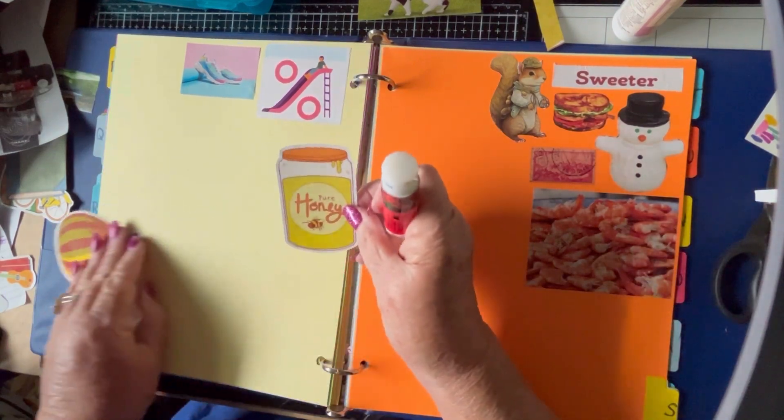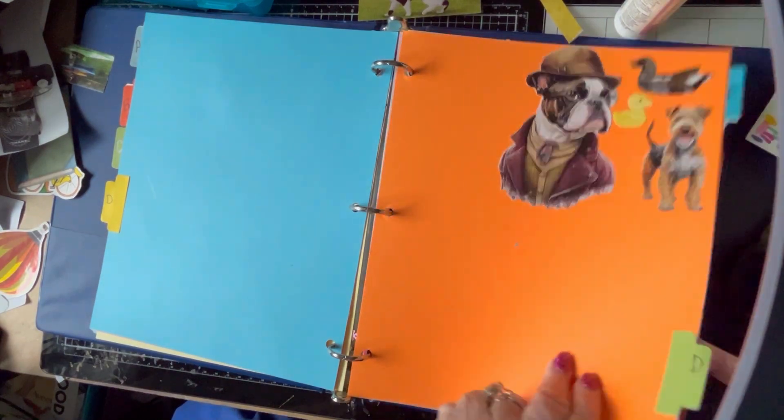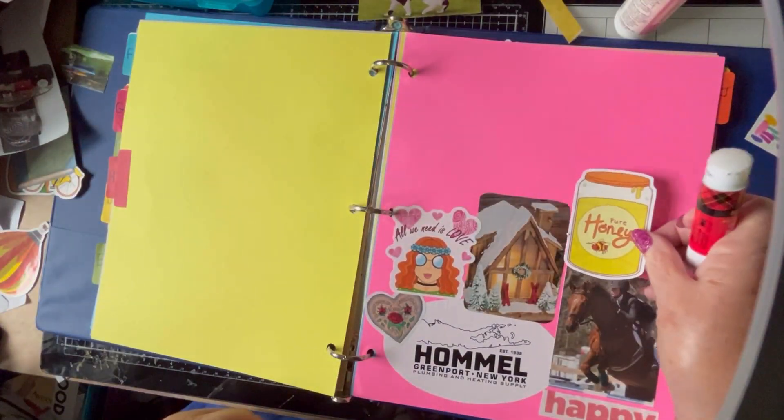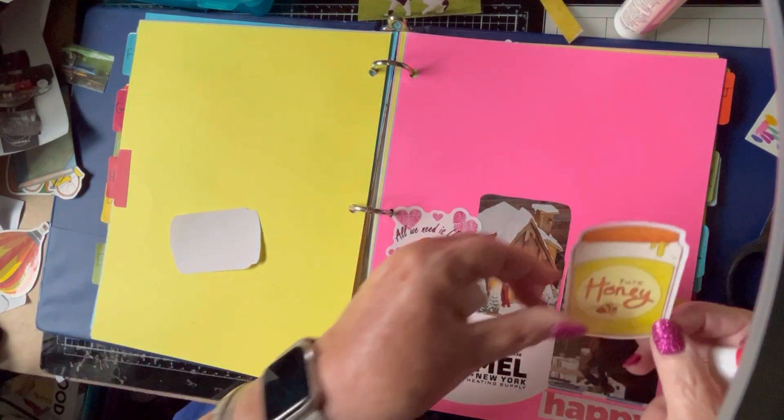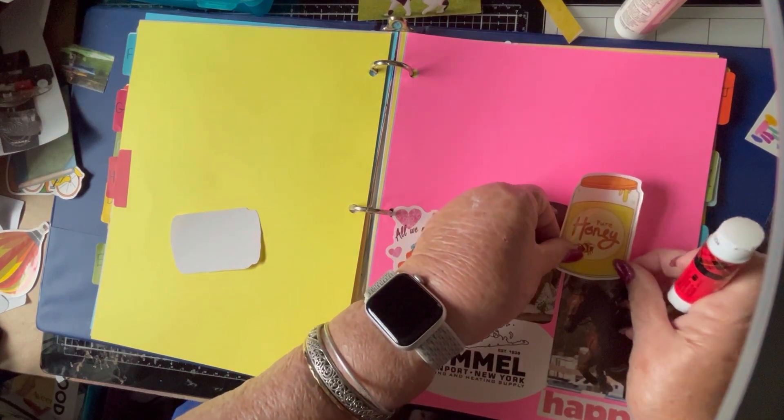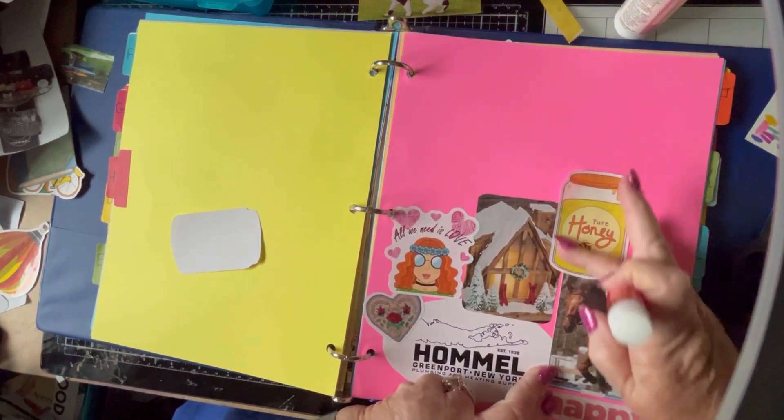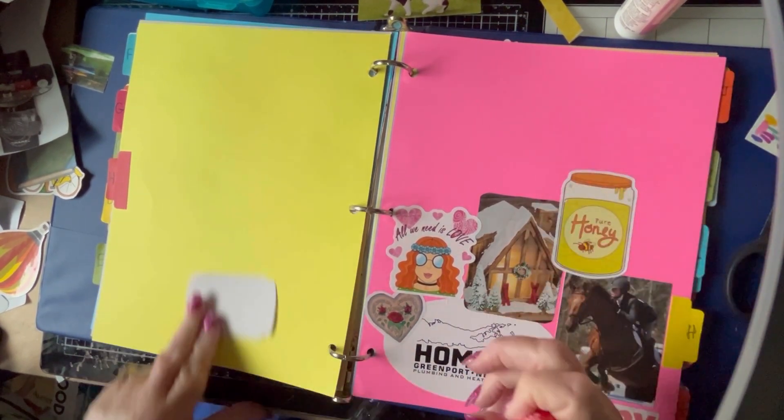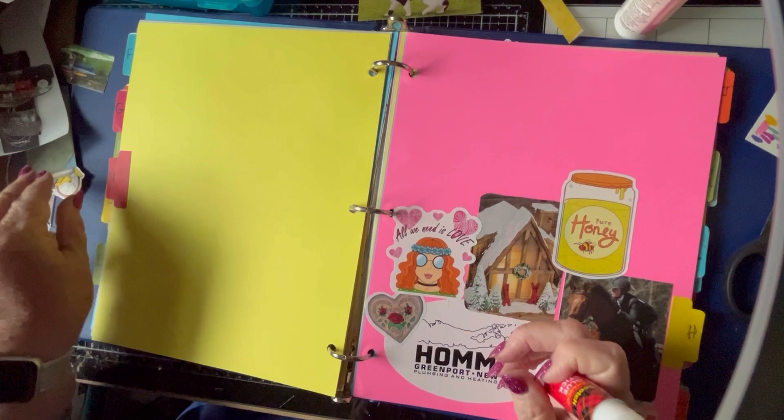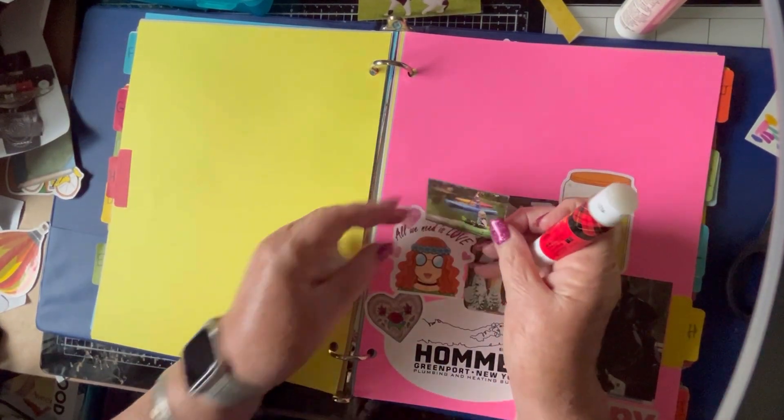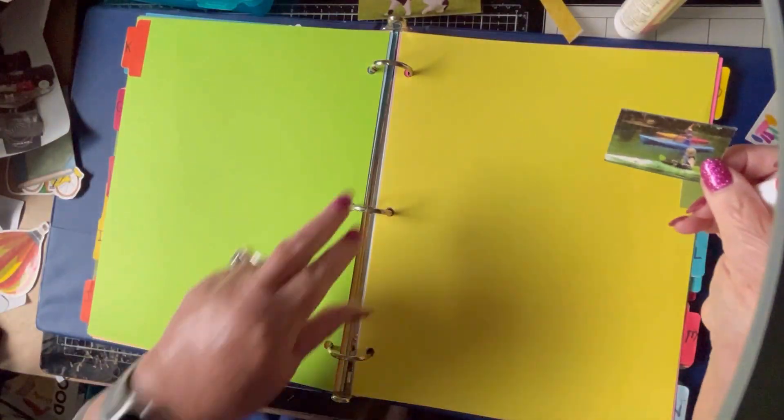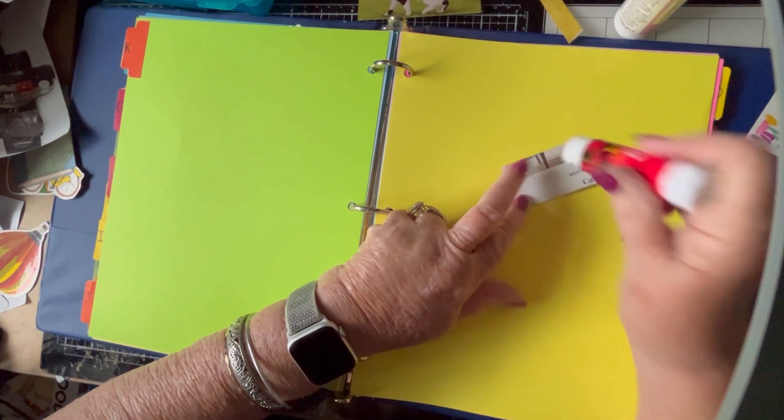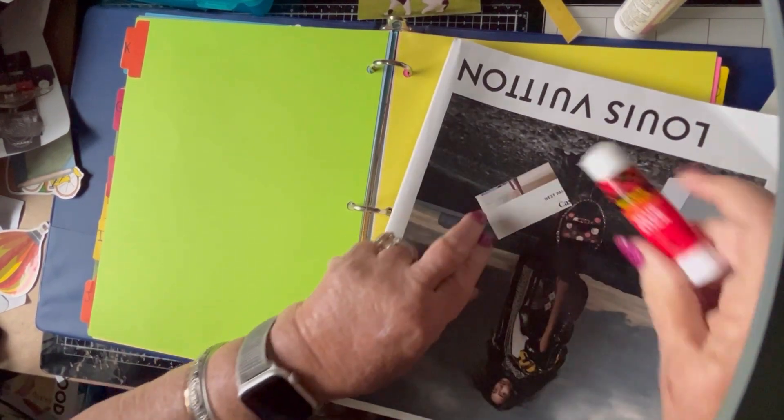Here's another sticker. It's an H. So we'll go back to the H page. With all the tabs, it really makes it easy to go back and forth. So we'll pull that one off and stick it right here. Make sure I'm not covering him. And moving right along. And here we have kayaks. So let's go find K, which we don't have yet. So yay, we got this page started.